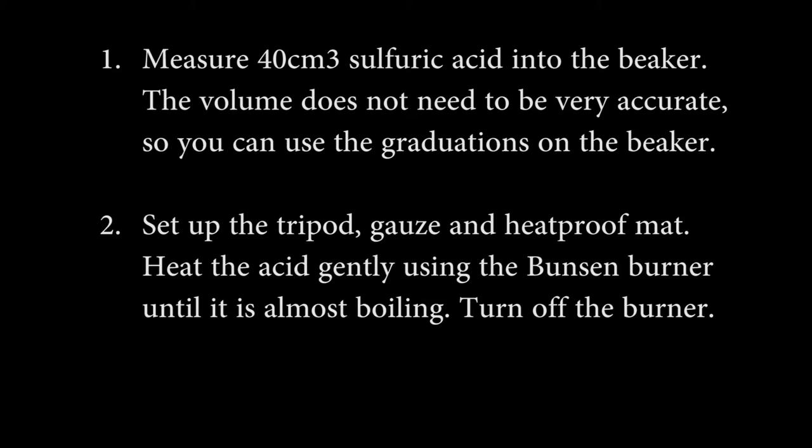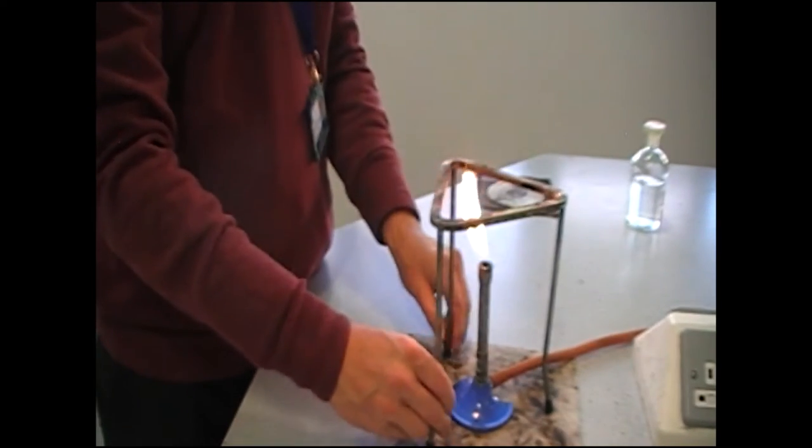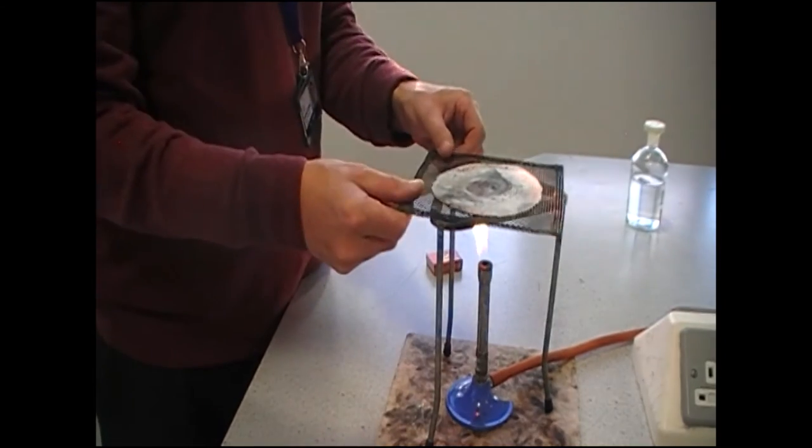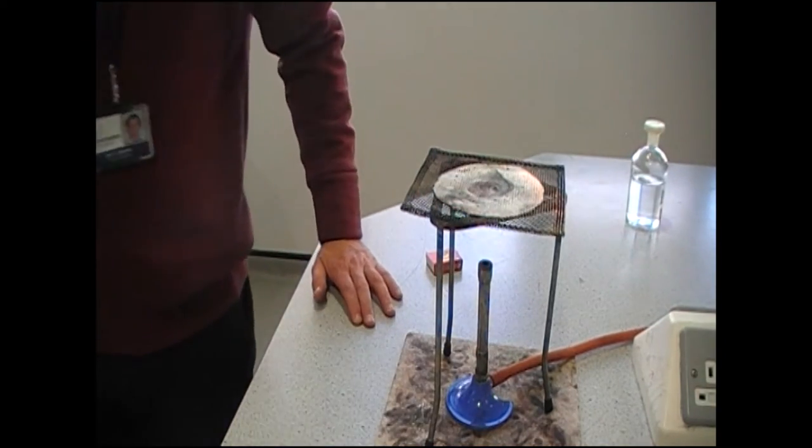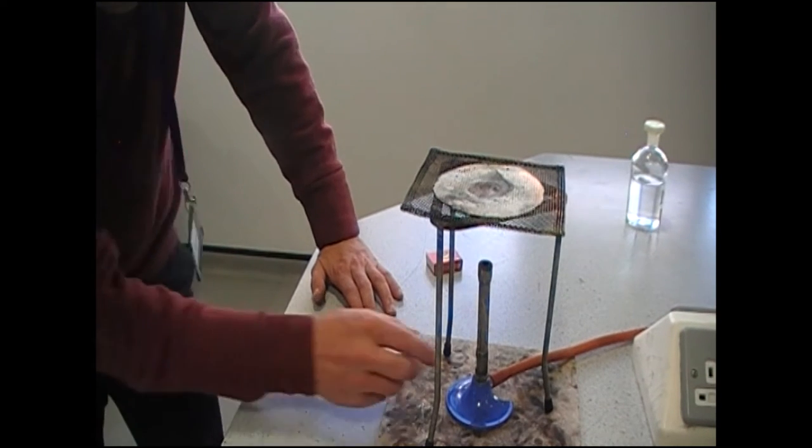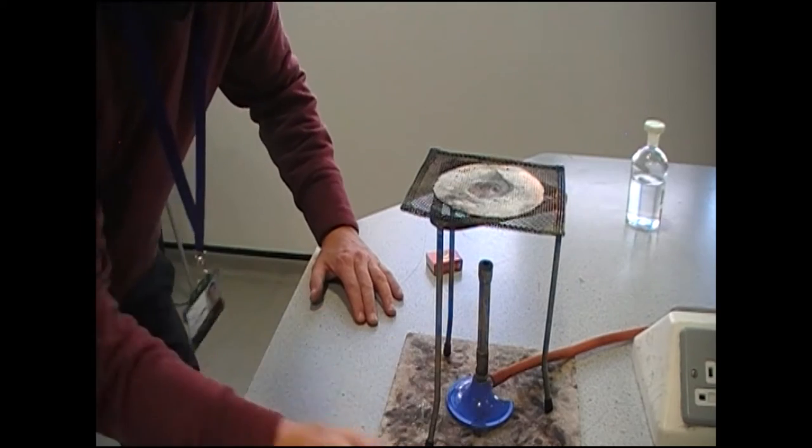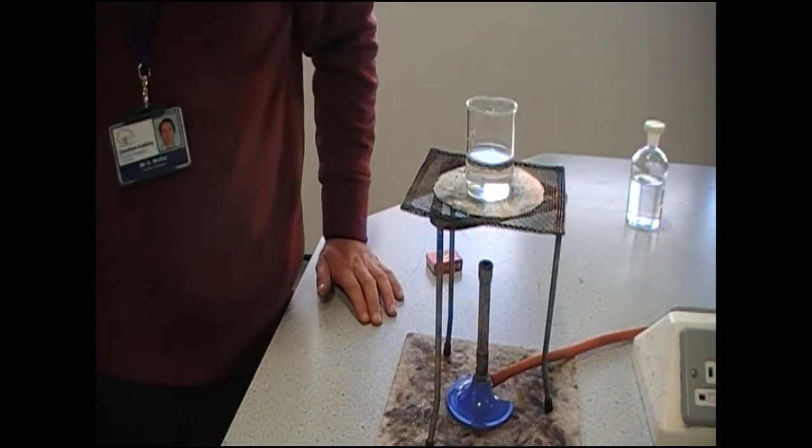Heat it up until you see it just beginning to bubble and then turn your Bunsen burner off. You should be stood up remember, we don't want anything landing in our laps. Heat the acid gently using the Bunsen burner until it is almost boiling. Gentle blue flame, not roaring.